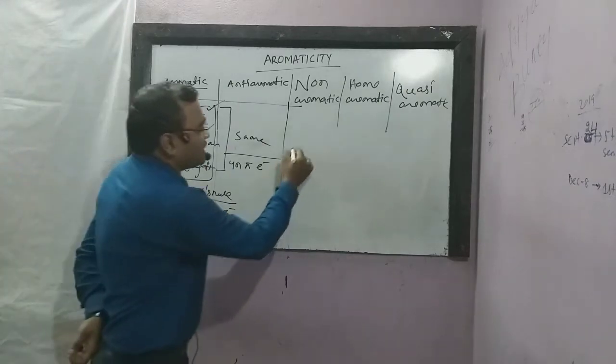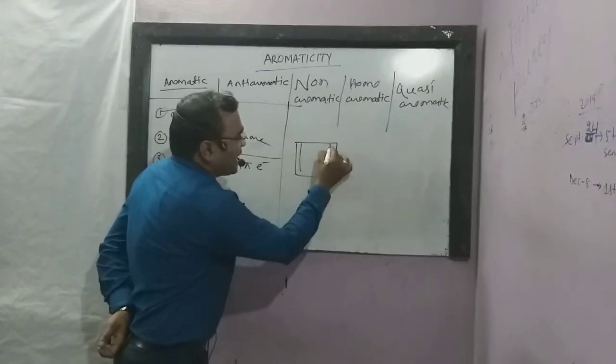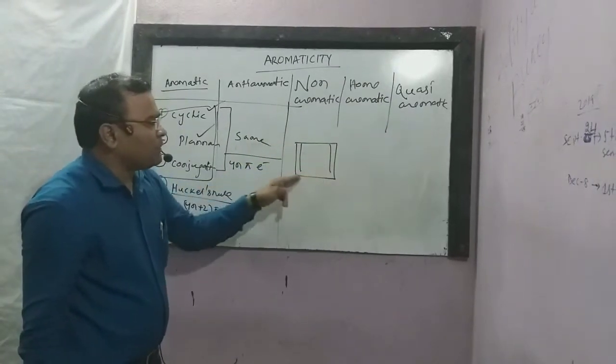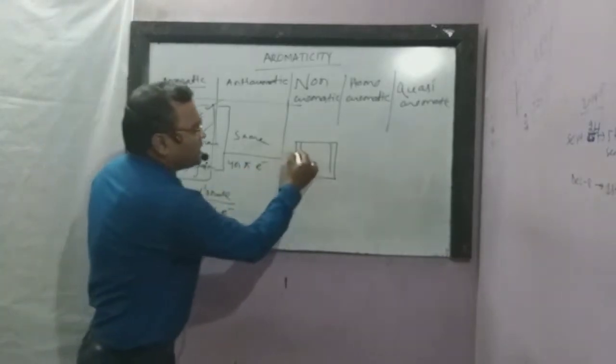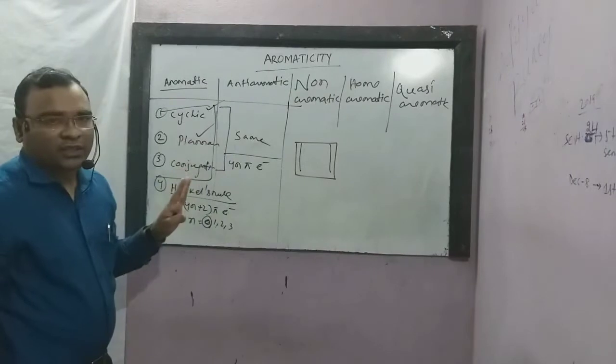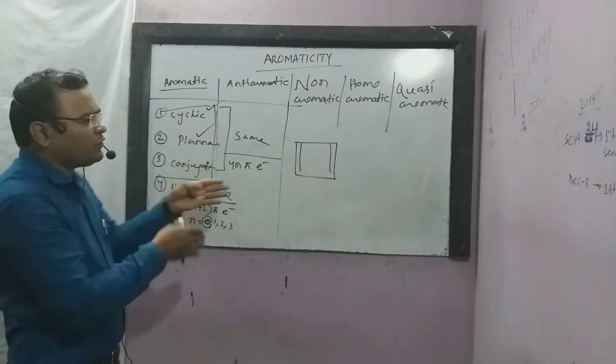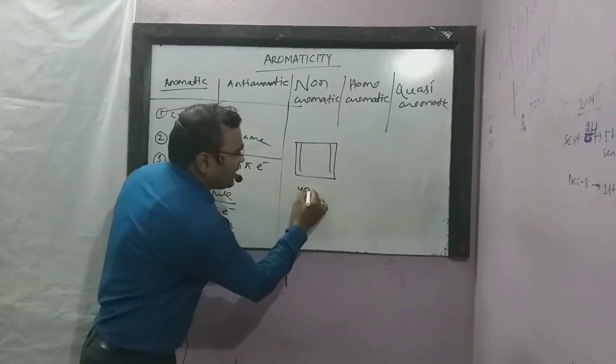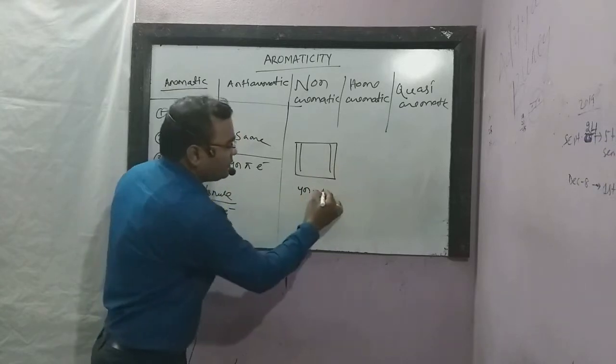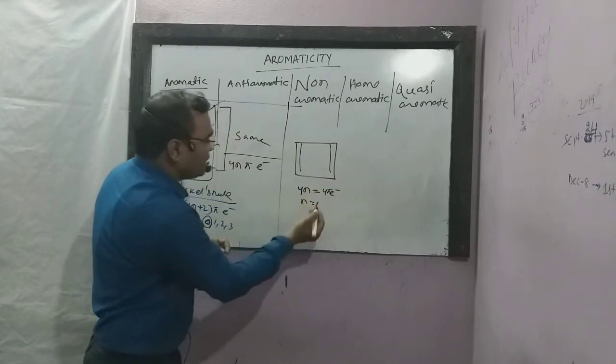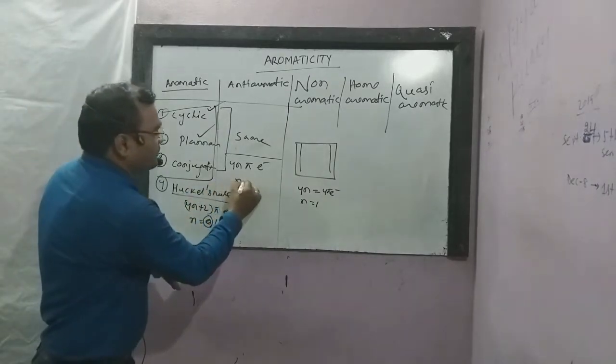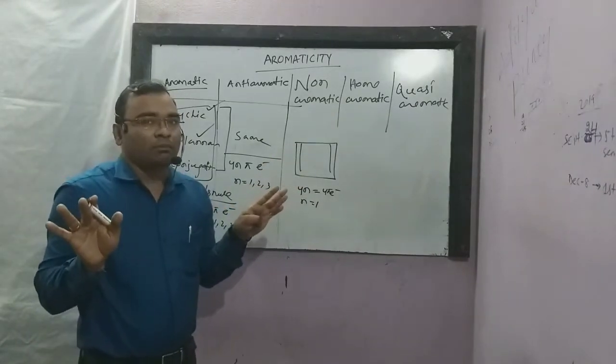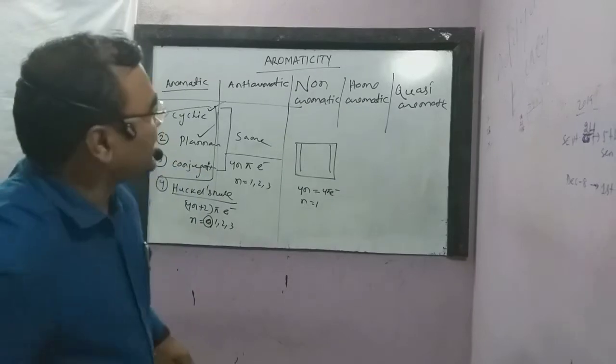Let's take an example of cyclobutadiene. It is cyclic and planar, with conjugation of pi electrons. If you apply 4n plus 2, it doesn't apply because it has 4 pi electrons. Using 4n equals 4, n equals 1. So this is anti-aromatic compound.